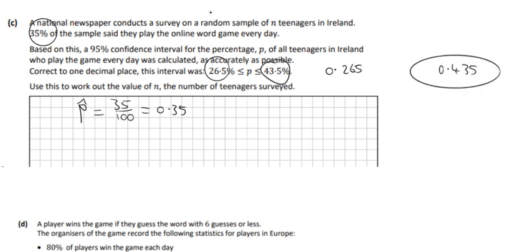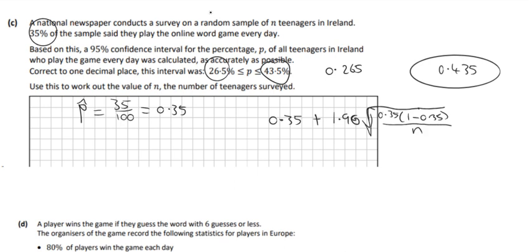To find n, we rearrange: move 0.35 across the equal sign, then divide by 1.96 to isolate the square root term. This gives 17/392 = √(0.35 × 0.65 / n). We then square both sides and cross-multiply to solve for n.